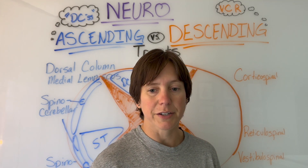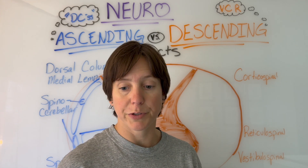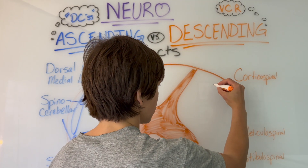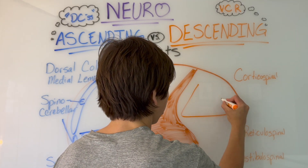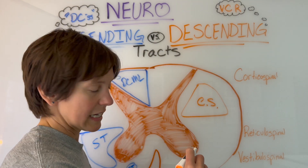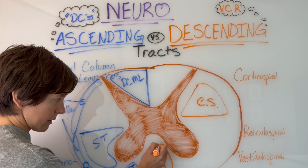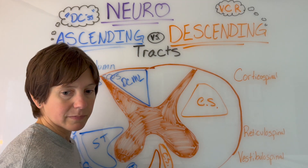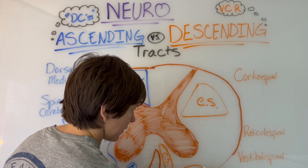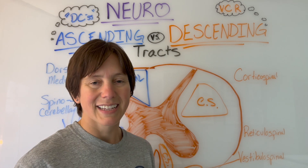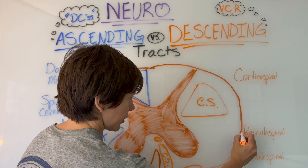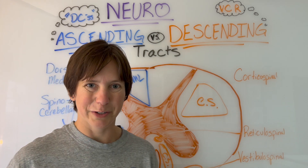For our descending tracts, we have the corticospinal, vestibulospinal, and reticulospinal. The corticospinal is up here in a big triangle, with another part of it down here as well. The vestibulospinal is down here, and then the reticulospinal is a small spot centrally.